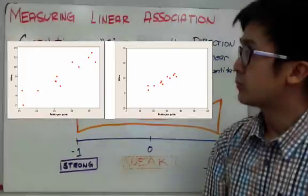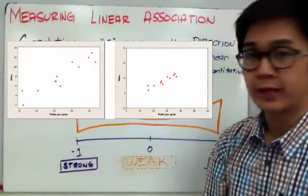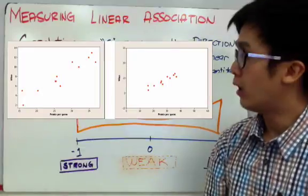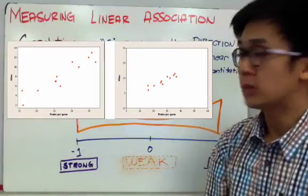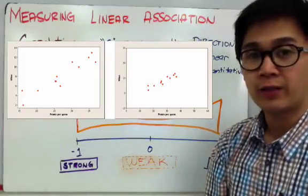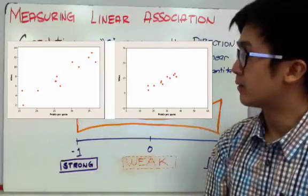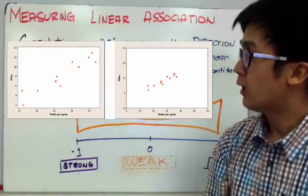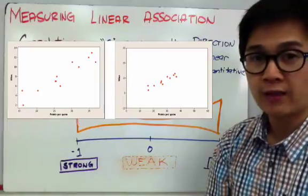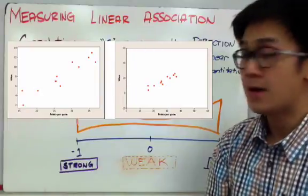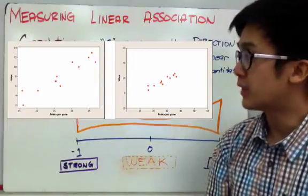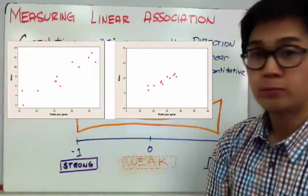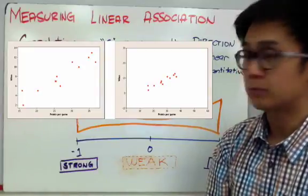By looking at the scatter plots you're seeing right now, you would assume that if we're going to compare the strength of the relationship between graph letter A and graph letter B, we would say that graph letter B has a much stronger relationship. But in reality, they have the same values or same number of points in this particular scatter plot.